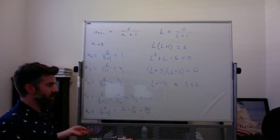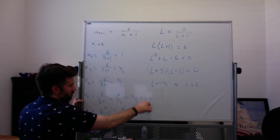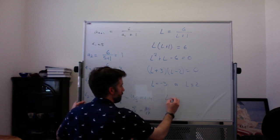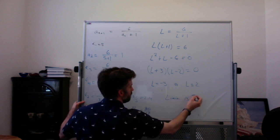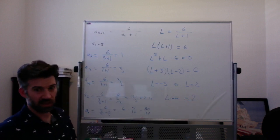So we're bouncing back and forth between values that are below 2, above 2, below 2, above 2, below 2, above 2. And we're getting closer and closer to 2. So I would say here the limit is 2. That's not super precise, but that's kind of the idea.